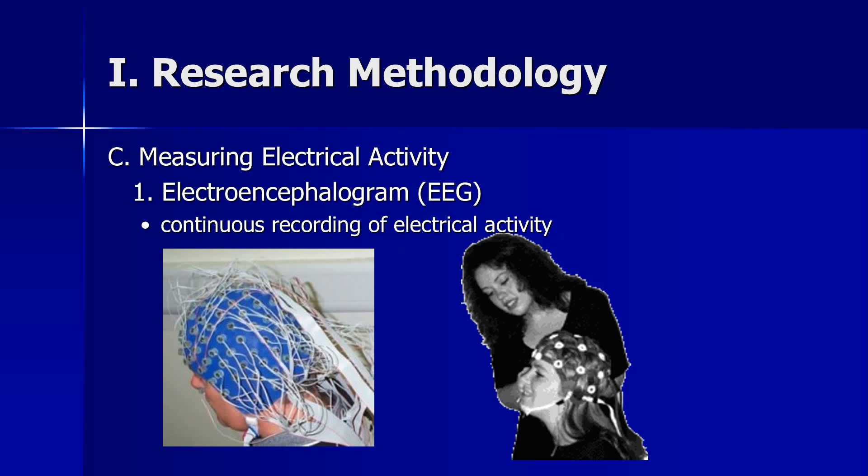Most of the time we're interested in examining healthy college students — we don't want to cause any damage, so we just record what's happening in the brain. The primary way that's done is by measuring electrical activity. The oldest basic version is electroencephalography, or EEG — a continuous recording of electrical activity in the brain. Electrodes are placed on the scalp; one system requires moving hair out from underneath the electrodes, which is a total pain.